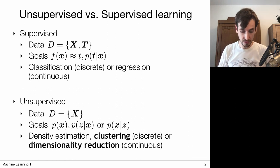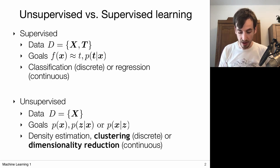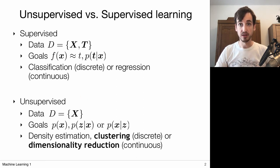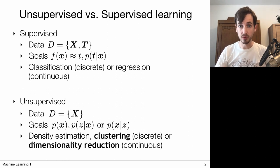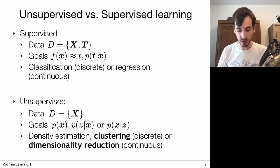Our first goal could be, for example, density estimation, where we simply want to reconstruct the probability density that generated this dataset. This could be useful for outlier detection — suppose I observe a new x and I want to know the probability of observing it. If it's highly improbable, maybe it's an outlier. We could also use this probability to generate new data points in a simulated environment.